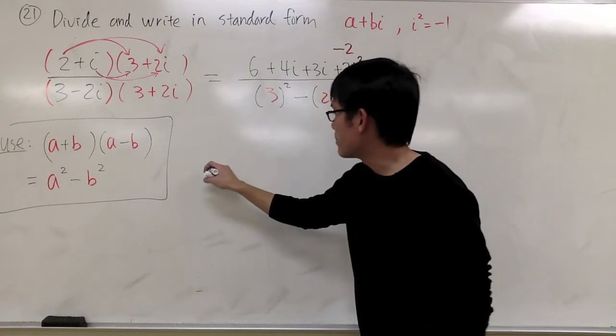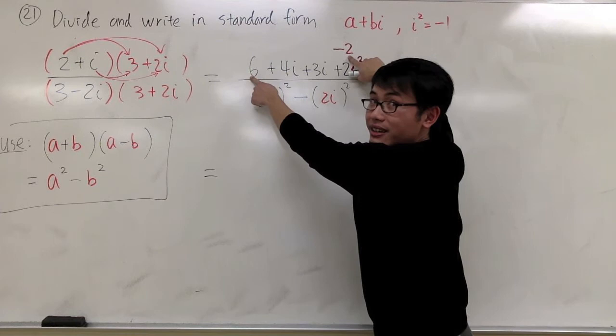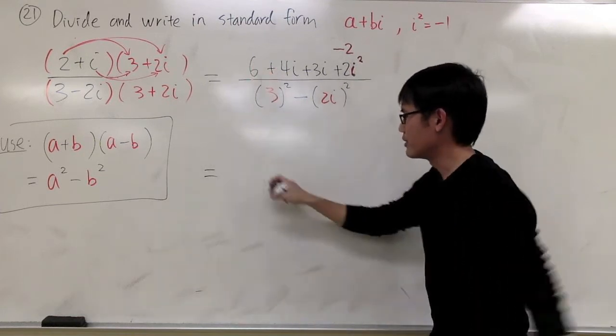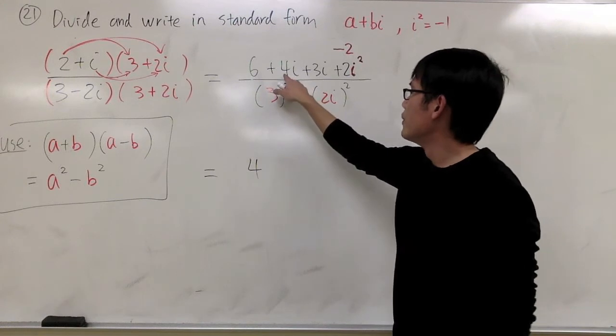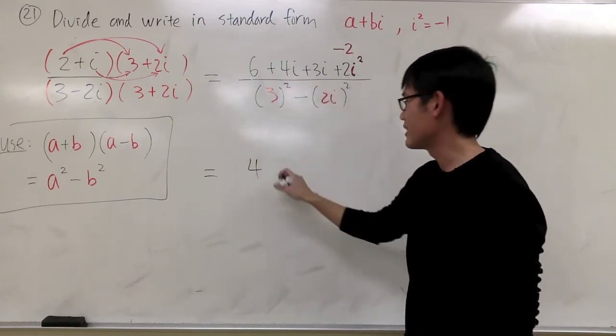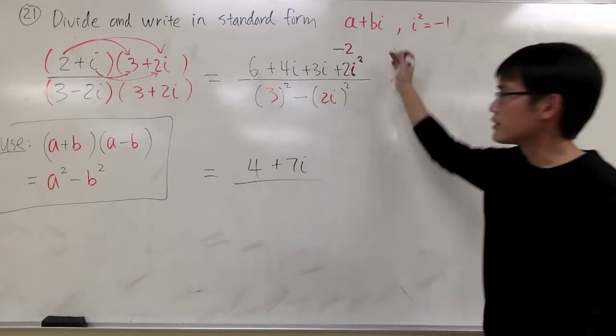On the top, I have 6 right here and negative 2 right here. So 6 minus 2 is 4. Then we have 4i plus 3i, which is 7i. So that's the top.